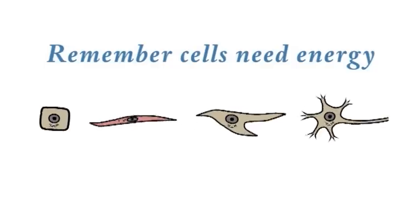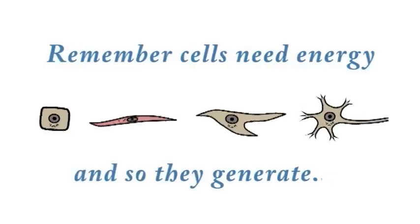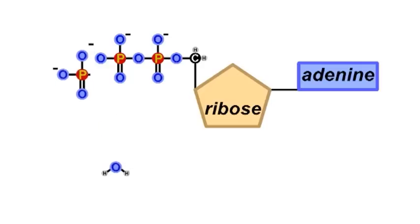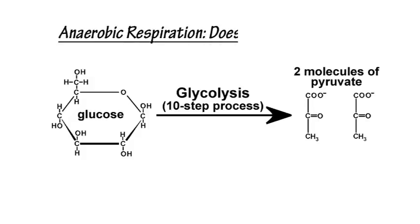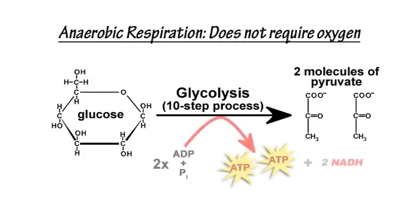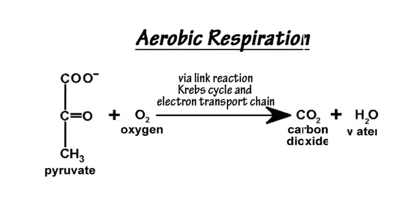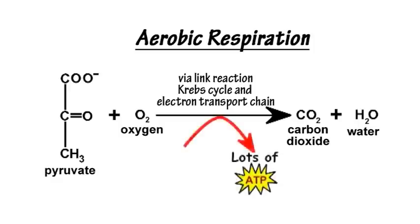Remember: cells need energy, and so they generate a molecule called ATP, which is adenosine triphosphate. Respiration can occur anaerobically, but that only nets two molecules of ATP. With oxygen, the CREP cycle begins to operate on the product of glycolysis called pyruvate. This in turn increases the production rate of ATP up to 36 or 38.